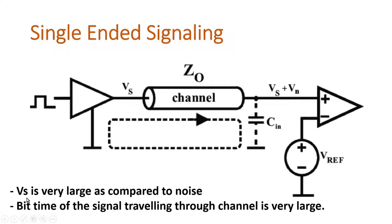I want to conclude two points from single-ended signaling. The first point is that single-ended signaling is successful if Vs — the voltage transmitted by the transmitter — is very large compared to noise, so the receiver will not see a significant impact of noise. The second important point is that if the bit time of the signal traveling through the channel is very large, then single-ended signaling is also successful.